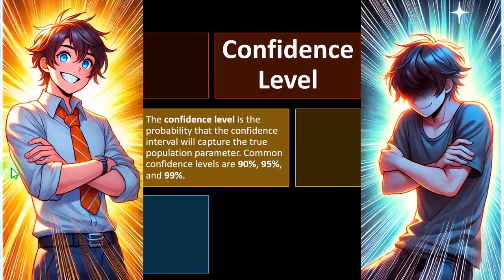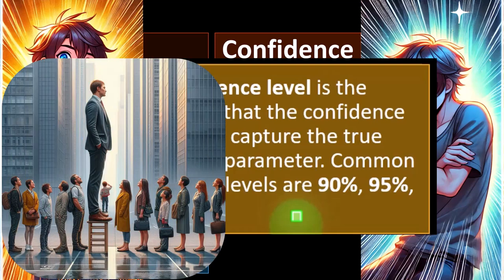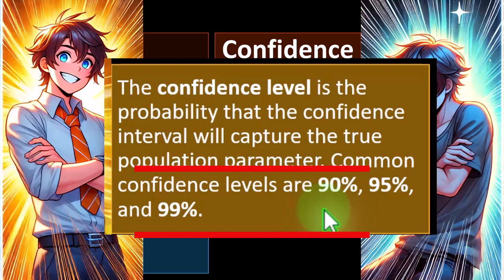The confidence level is the probability that the confidence interval will capture the true population parameter. Common confidence levels are 90%, 95%, and 99%. For example, if our sample gave us a six-foot average height, we then set the confidence level — similar to setting alpha in hypothesis testing — at 90%, 95%, or 99%. We can imagine constructing a bell-shaped curve around the sample result, where two standard deviations out (about 1.96) on each side captures around 95% of the data, with 5% remaining in the tails.